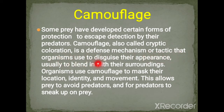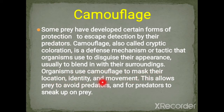Camouflage is a defense mechanism used by prey to blend in with their surroundings, so that predators cannot easily spot them. Organisms use camouflage to mask their location, identity, and movement. This allows prey to avoid predators, and also allows predators to sneak up on prey — so both predators and prey use camouflage.